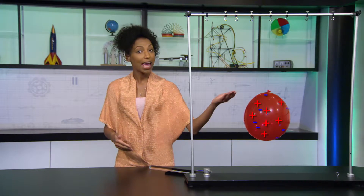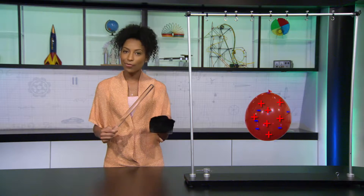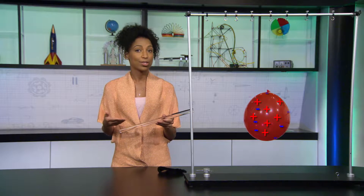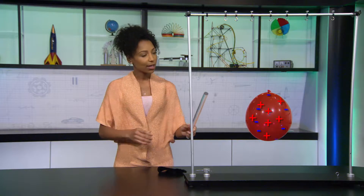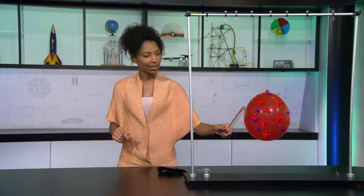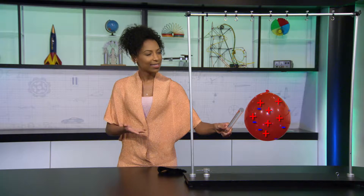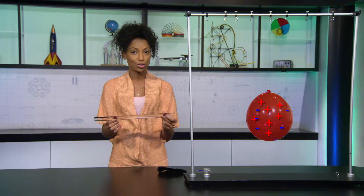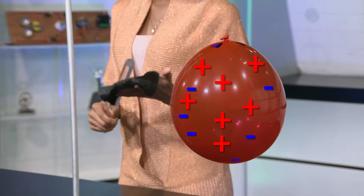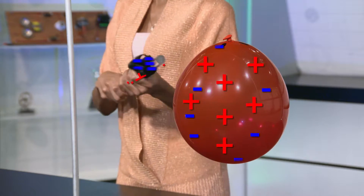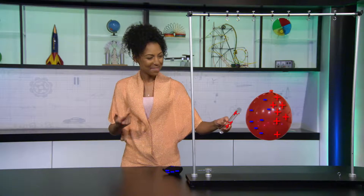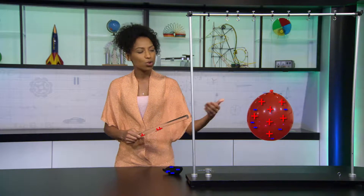I have an uncharged balloon hanging by an insulating thread, a glass rod, and some fur. Let's look at charging by friction first. Let me prove to you this glass rod is uncharged — I'll bring it close to the balloon without touching, and the balloon is neither attracted nor repelled. So right now, the rod has no net charge. Now, if I rub the fur on the glass rod and then bring the rod near the balloon, the balloon is pulled toward the rod.